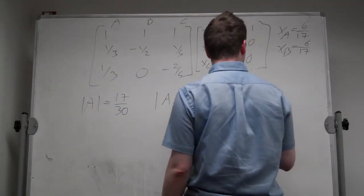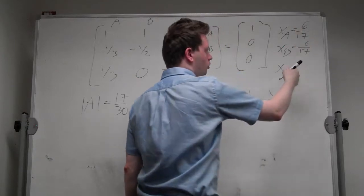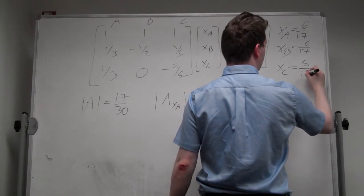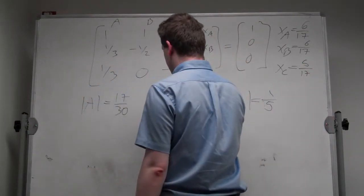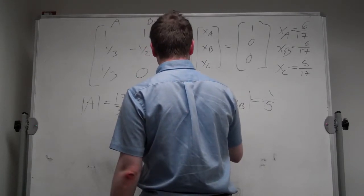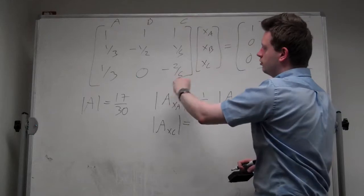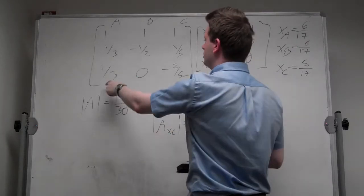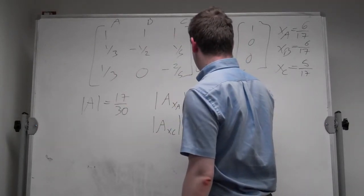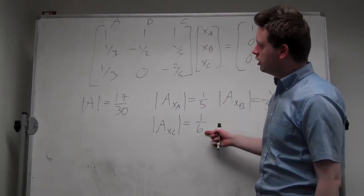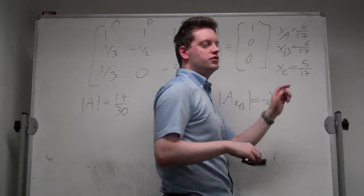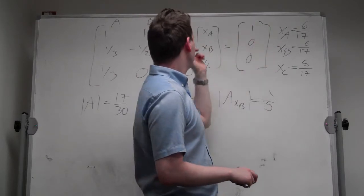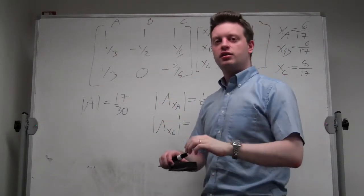Last one. We can either directly infer, since all three need to sum up to 1, 6 + 6 = 12, plus 5 gives us XC. Or we calculate the determinant of A XC, which is simply replacing the third column with this vector. We find that all falling diagonals are 0, and the only raising diagonal is this one here, which is 1/6. This gives us a determinant. Plugging this in here will give us 5/17 as our final distribution given this transition matrix. Thank you for watching.